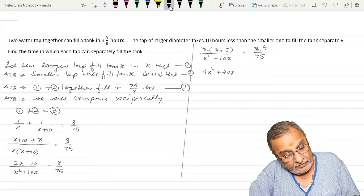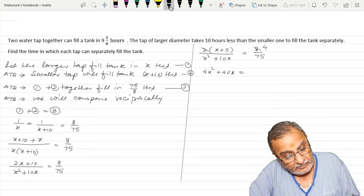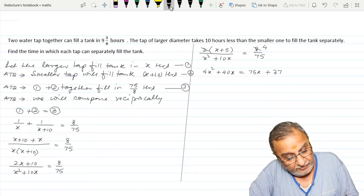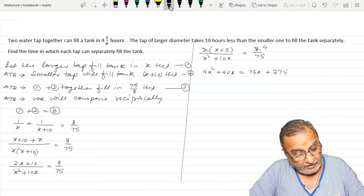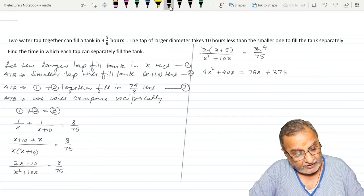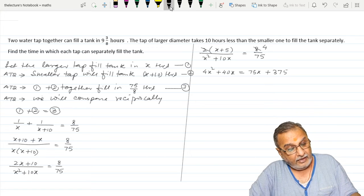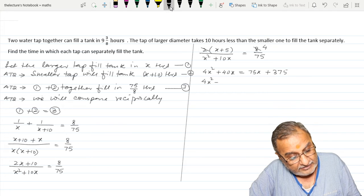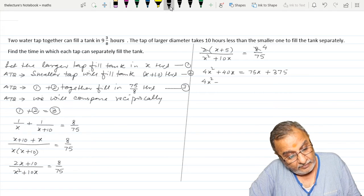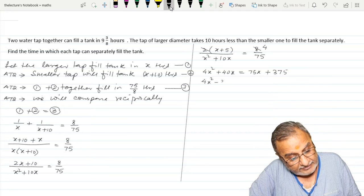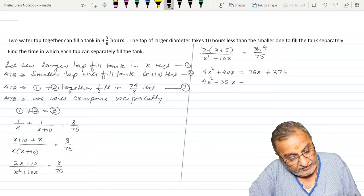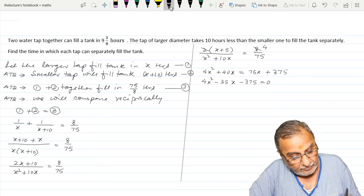So 4X squared plus 40X equals 75X plus 375. Multiply and the equation becomes 4X squared minus 35X minus 375 equals 0.